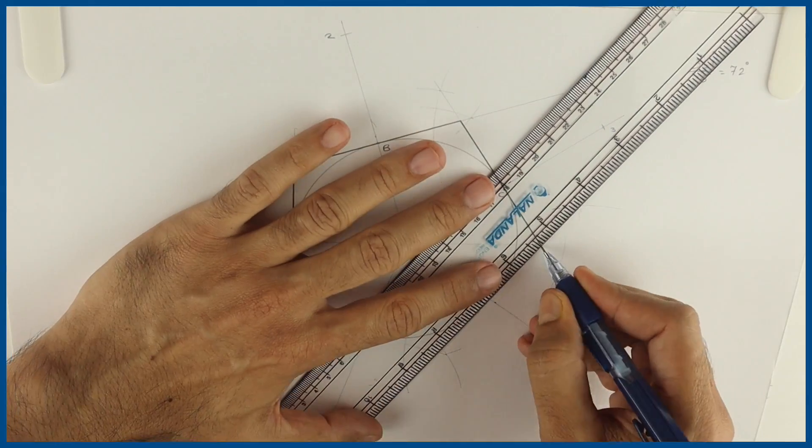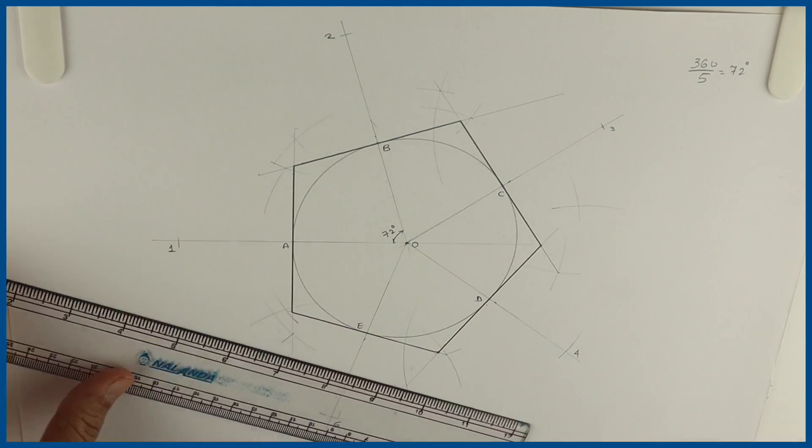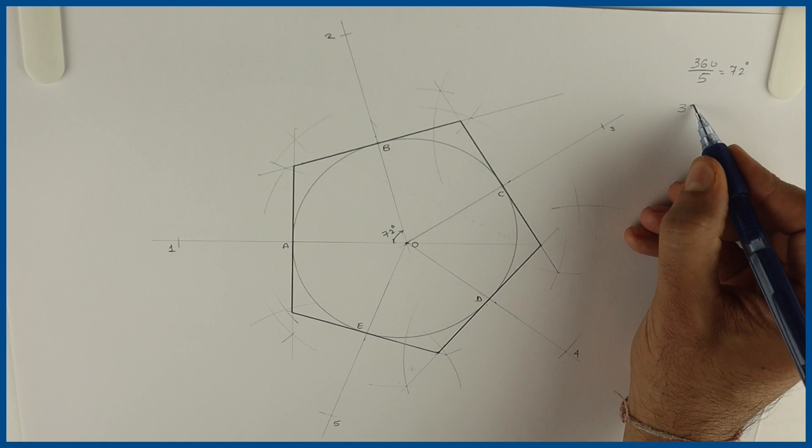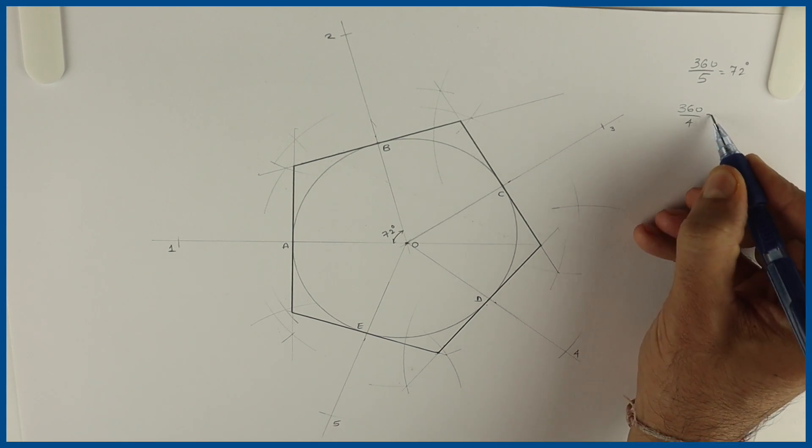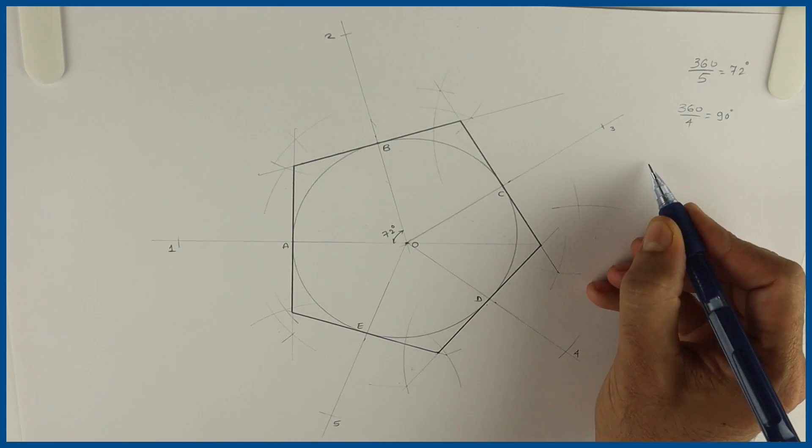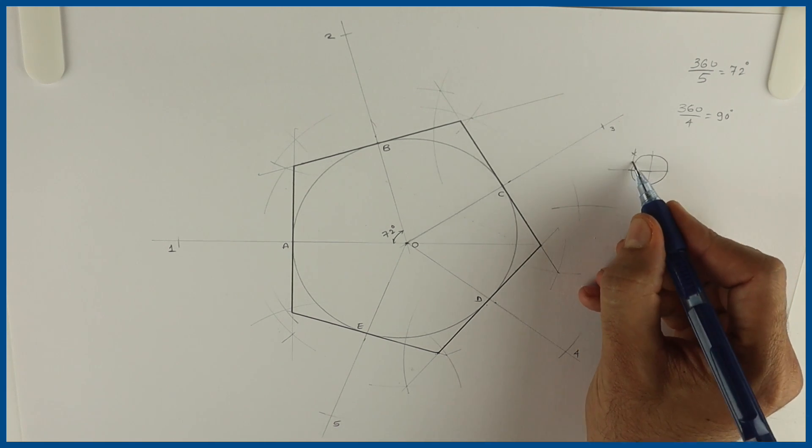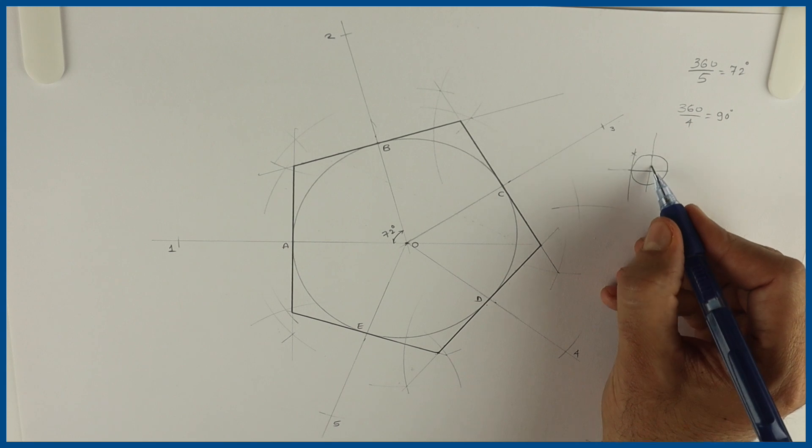Now this way we can draw any polygon around a circle. Let's say you want to draw square outside a circle. So 360 divided by 4. It would be 90. Then you draw a circle and take 90, 90, 90. You divide circle into 4 parts. And then again you can draw tangent.